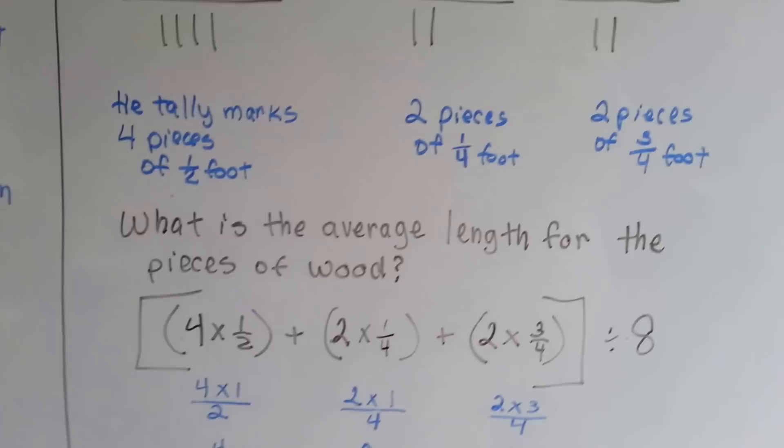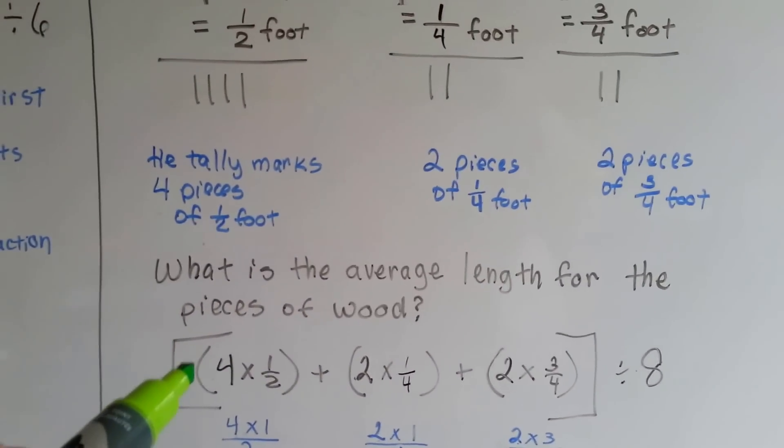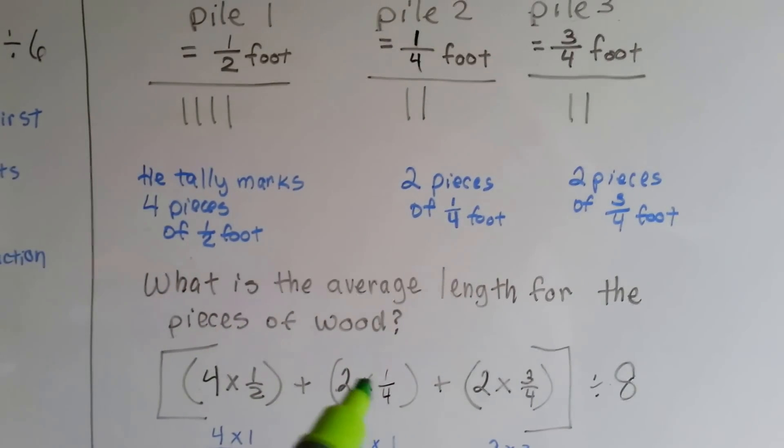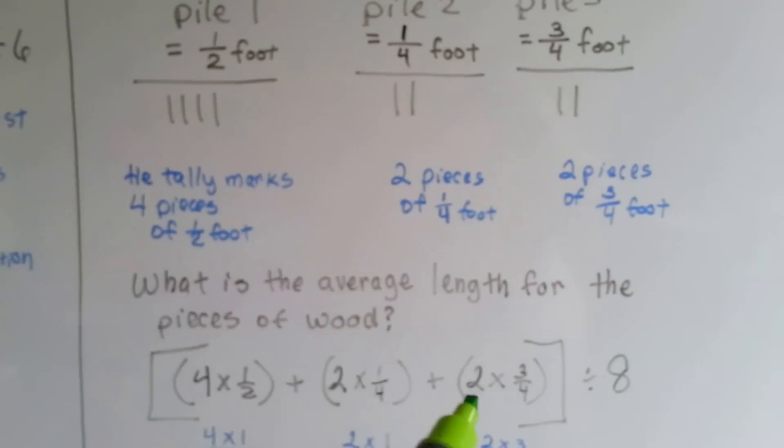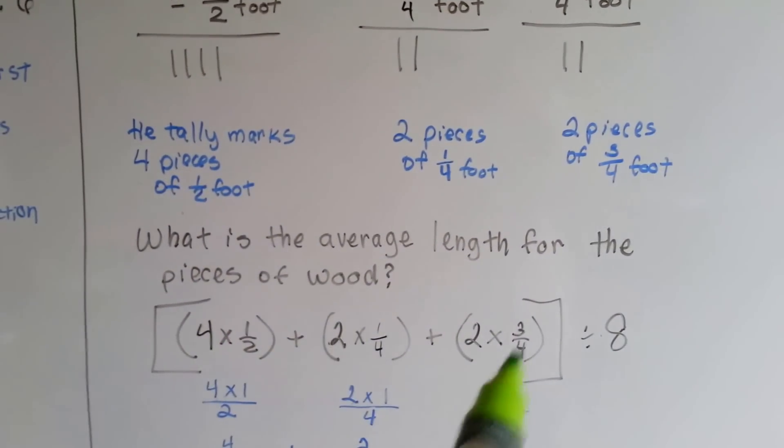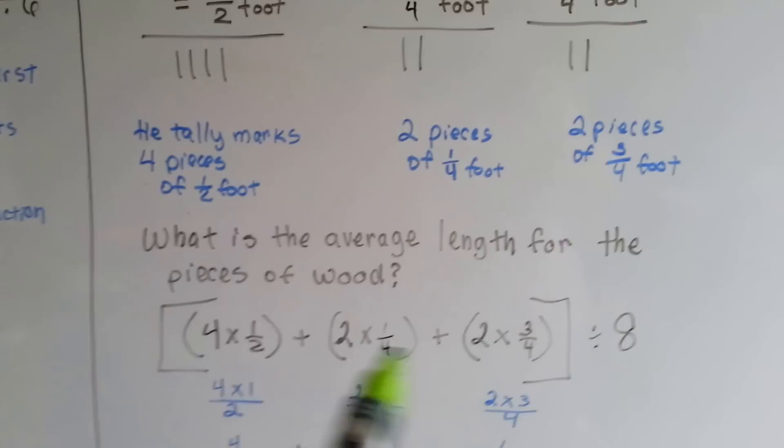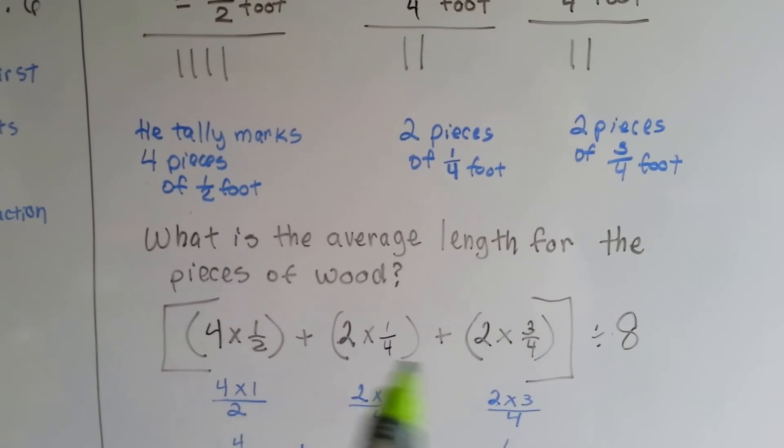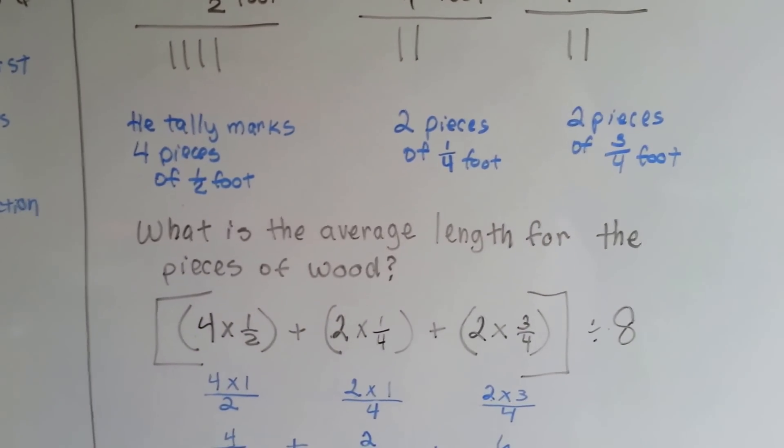So, to find the average length for these pieces of wood, we use the order of operations. We've got four times a half, two times one-fourth, and two times three-fourths. And then we need to divide it by eight. So, we're going to do inside the parentheses first, for order of operations. Then we're going to add them all together, that's what's inside the brackets, and then we're going to divide it.